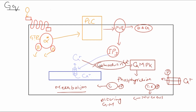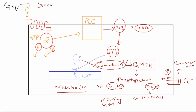So to summarize: ligand attached, alpha subunit activated, PLC activated, PIP2 split into IP3 and DAG. IP3 activates ion channels on the endoplasmic reticulum, releasing calcium. Calcium binds calmodulin forming a complex, which activates calcium-calmodulin protein kinase. This kinase phosphorylates enzymes, transcriptional factors, and ion channels. The calcium also binds to myosin light chains and performs contraction. GQ protein-coupled receptors are present on smooth muscles, causing smooth muscle contraction.